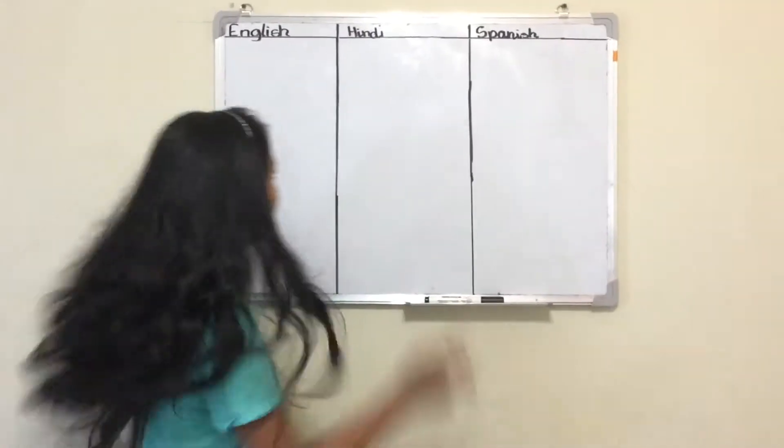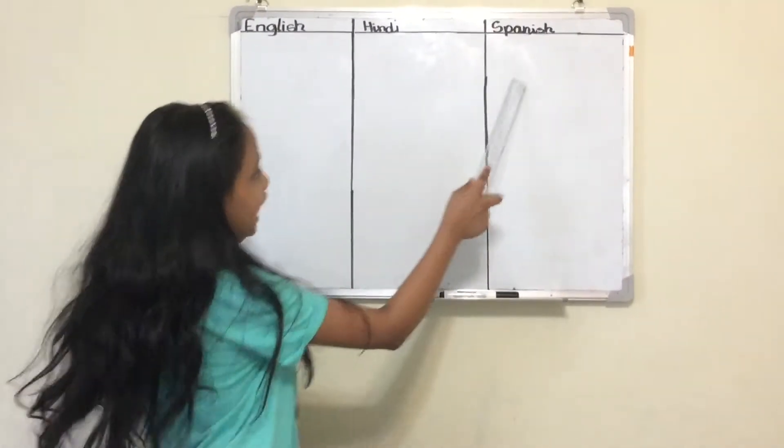Hello everyone and welcome back to my channel. Today I am going to teach you color names in three languages: English, Hindi, and Spanish, with my student Drishti Gupta.